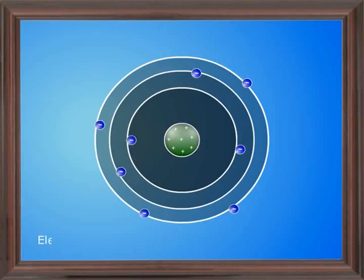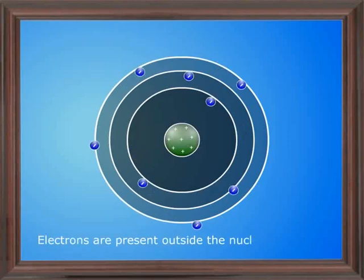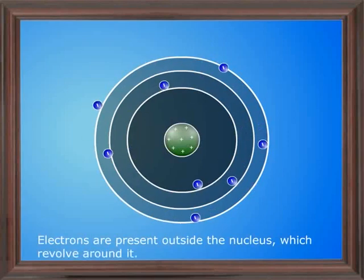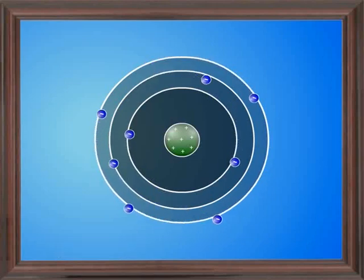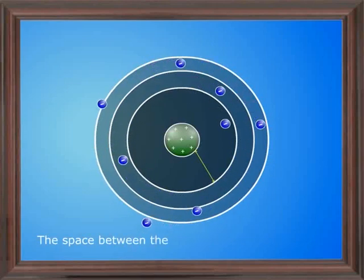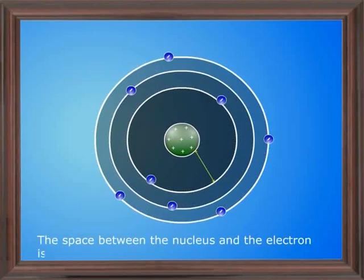2. Electrons are present outside the nucleus which revolve around it. 3. The space between the nucleus and the electron is largely empty.